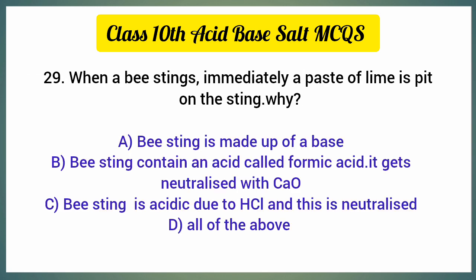Bee stings — immediately a paste of lime is put on the sting; why? The correct option is option B: bee sting contains an acid called formic acid, which gets neutralized with CaO.